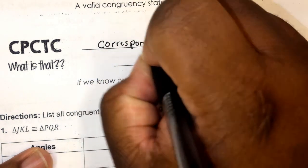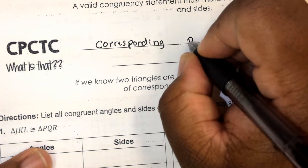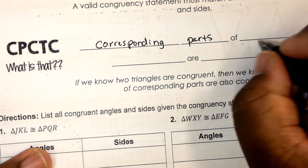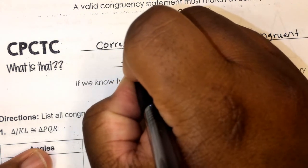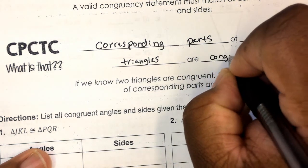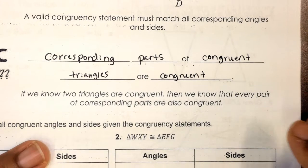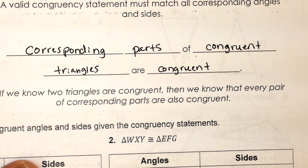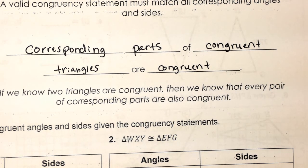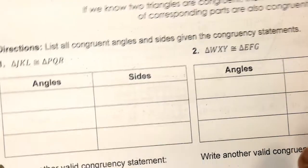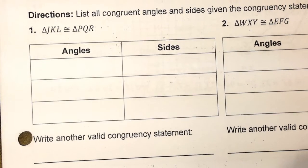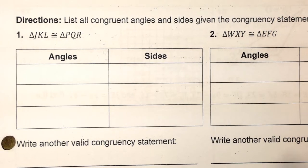CPCTC — all that means is 'corresponding parts of congruent triangles are congruent.' It's a statement you make after you prove two triangles to be congruent to each other. You say if two triangles are congruent, then the corresponding parts are congruent. We're going to use this a lot when we get into our proofs after we do our EOC next week. Last year kids liked proofs, the year before they didn't — we'll see how y'all feel when we get there.